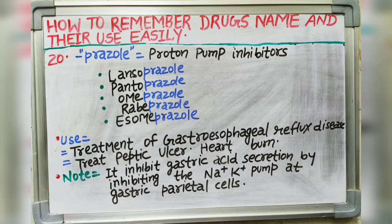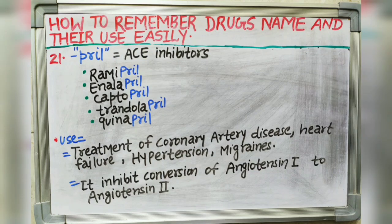Next suffix is -pril. Pril indicates angiotensin converting enzyme inhibitors — ACE inhibitors. Drugs like ramipril, enalapril, captopril, trandolapril and quinapril all end with the -pril suffix. It is used in treatment of coronary artery disease, heart failure, hypertension and migraines. It inhibits conversion of angiotensin 1 to angiotensin 2.